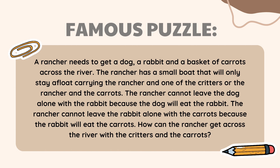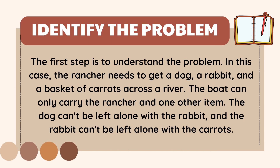The first step is to understand the problem. The rancher needs to get a dog, a rabbit, and a basket of carrots across a river. The boat can only carry the rancher and one other item. The dog can't be left alone with the rabbit, and the rabbit can't be left alone with the carrot. It is necessary to comprehend these constraints to know the important aspects of the problem.